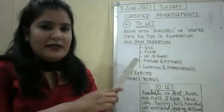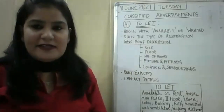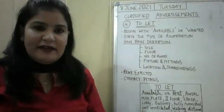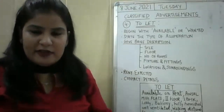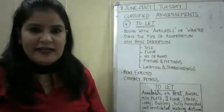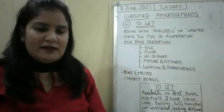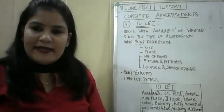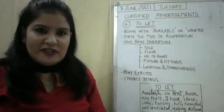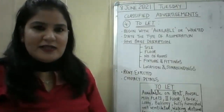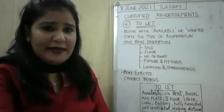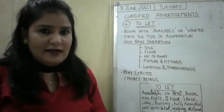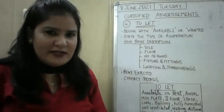Let's start without wasting much time. In classified advertisement, the first category we have done is Situation Vacant, the second category is Situation Wanted — when you need a job. The third category we done recently when your exams were there — Sale and Purchase of household goods, vehicles, furniture. Now we are going to start with the fourth category.